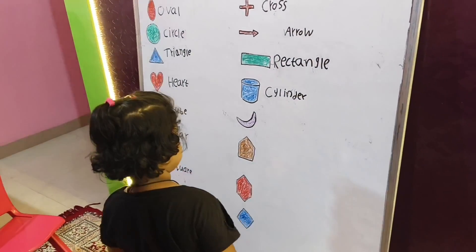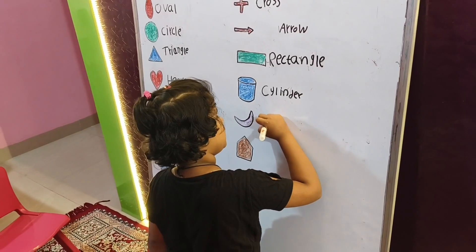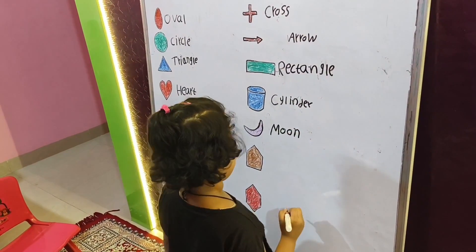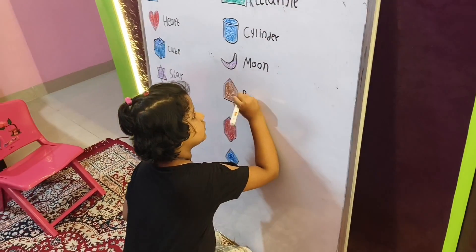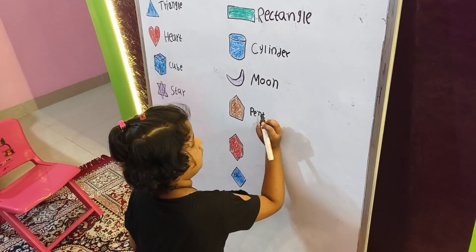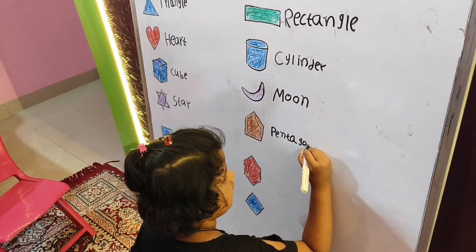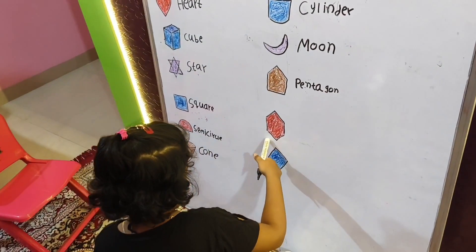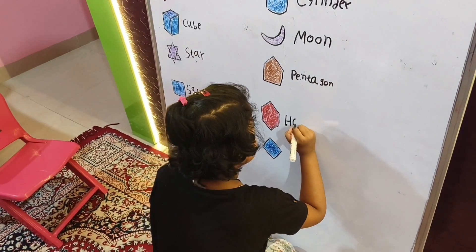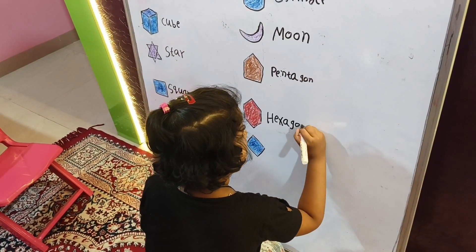C-Y-L-I-N-D-E-R. Cylinder. Next one. Moon. C-O-D-M-O-O-N. Moon. Yeah. Pentagon. P-E-N-T-A-G-O-N. Pentagon. Hexagon. H-E-X-A-G-O-N. Hexagon.